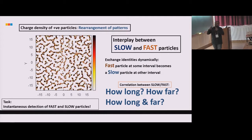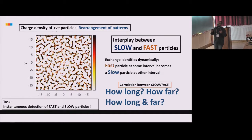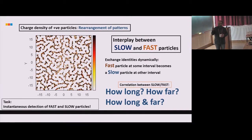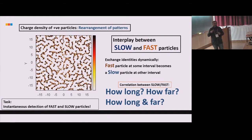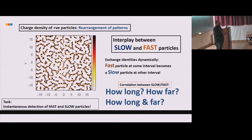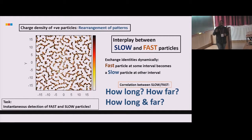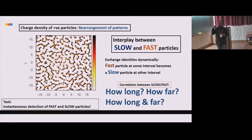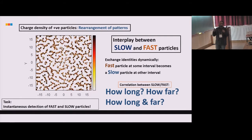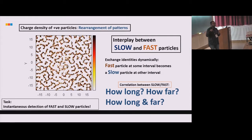Now we try to understand what happens to the slow and fast particles and how do they contribute in the formation of these patterns. Since the patterns evolve, there must be an interplay between the slow and fast particles. What we have seen is that slow and fast particles do also exchange their identities dynamically. At some time interval a slow particle can become a fast particle at some other instant, and vice versa. We are looking at the spatiotemporal correlation between slow and fast particles. We ask two simple questions: How long are they going to be fast and how far are they going to be correlated spatiotemporally?